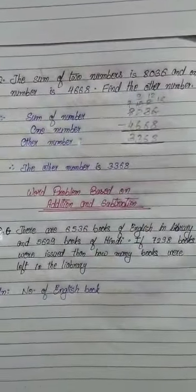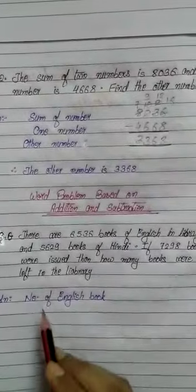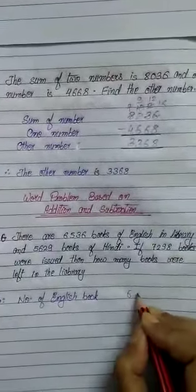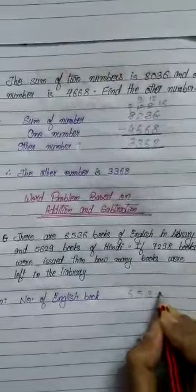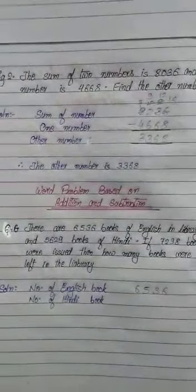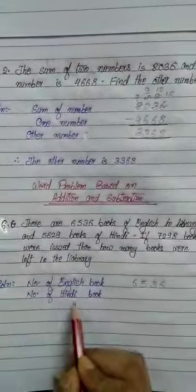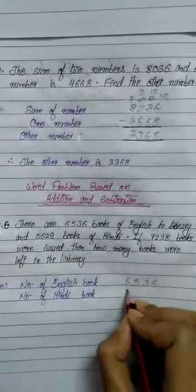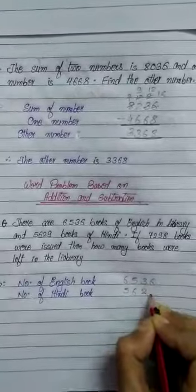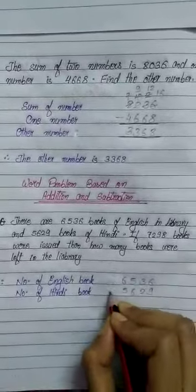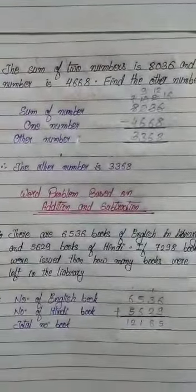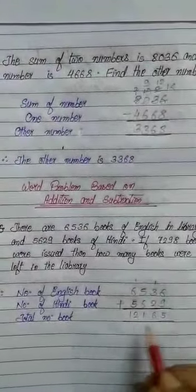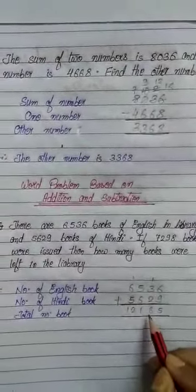First, write: number of English books — that is 6,536. Then the second statement: number of Hindi books — that is 5,629. Now let's add both. By adding both numbers, we will get the total number of books, which is 12,165.